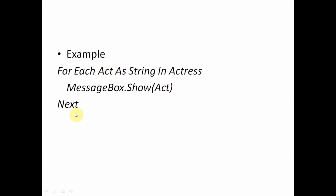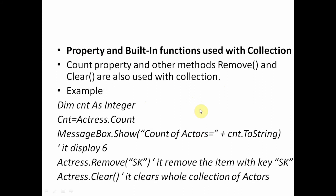The For Each loop iterates until it traverses each and every element within the collection. As you can notice, we don't need to use any index or iteration variable — the loop terminates as soon as the last value is reached. Now, as Collection is a class, it has properties and methods. Count is the property which returns the number of elements within the collection. Remove is the method used to remove a particular element. Clear is the method used to clear the whole collection, removing every value.